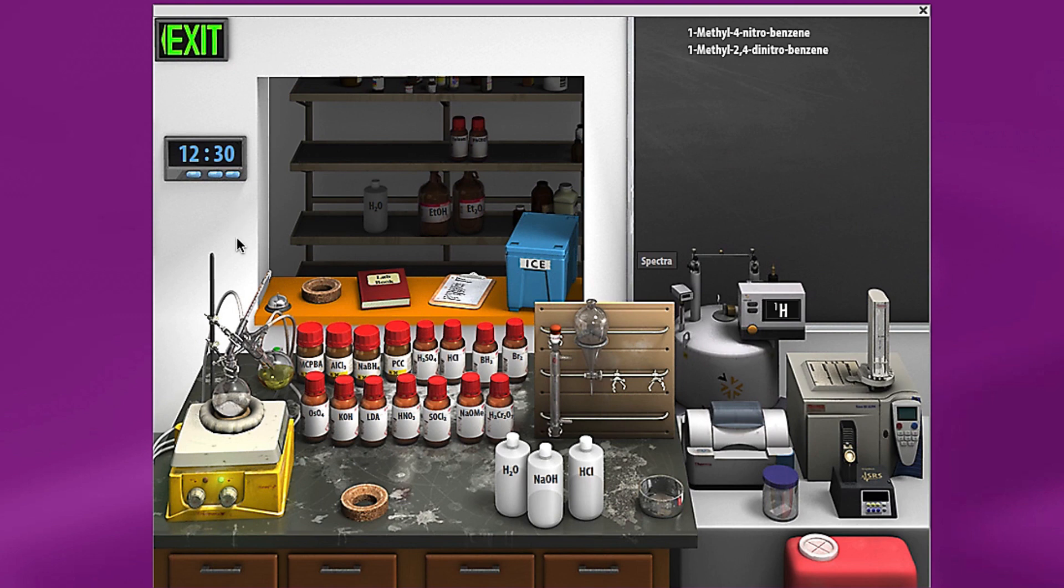Okay. So now we have all of our two nitro here all separated. And we have our other two remaining here still in the flask. And so that's how you'd go about doing a separation.